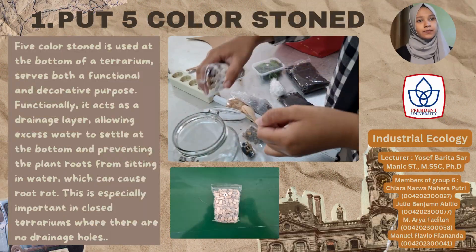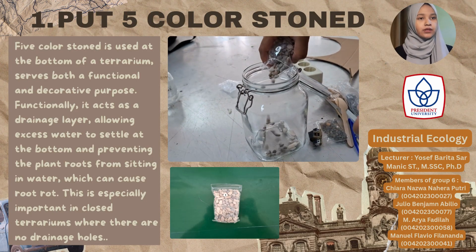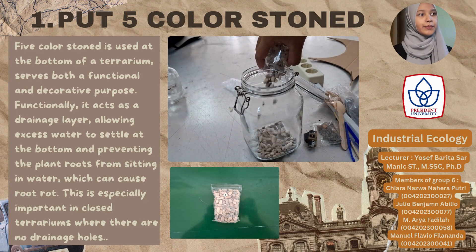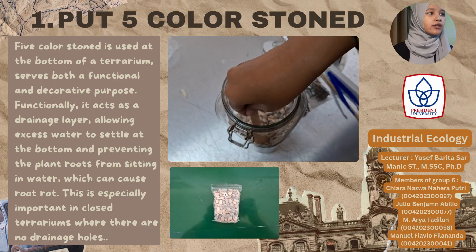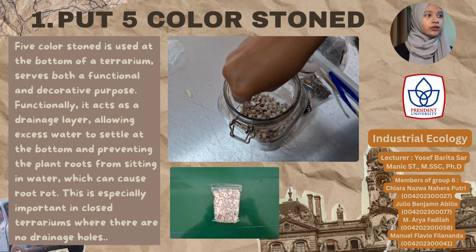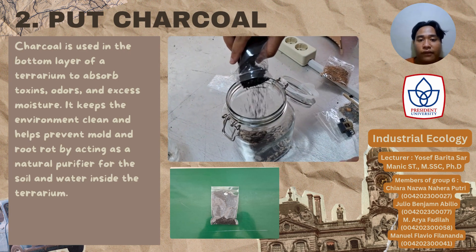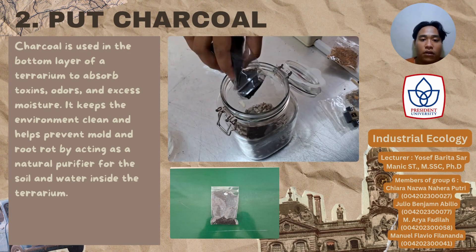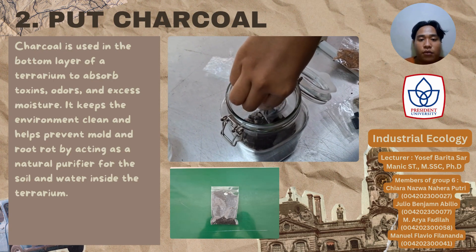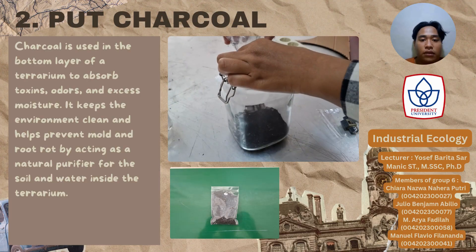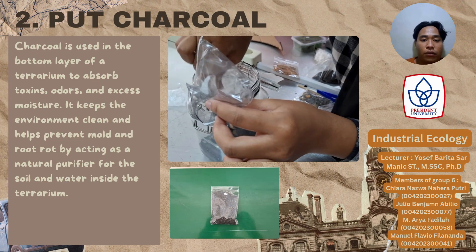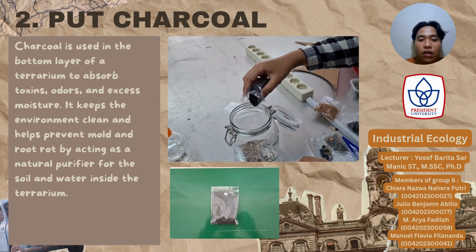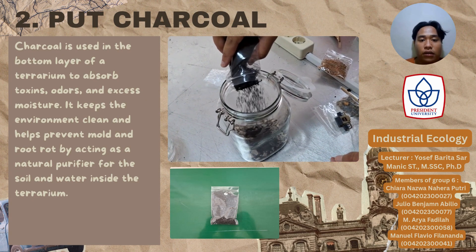The first step is to put batu pancavarna, or five-color stone, into the terrarium. Five-color stone is used at the bottom as a drainage layer to prevent root rot and add natural color and texture for decoration. Charcoal is then used in the bottom layer to absorb toxins, odors, and excess moisture. It keeps the environment clean and helps prevent root rot by acting as a natural purifier for the soil and water inside the terrarium.